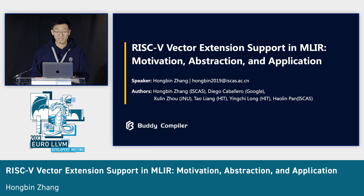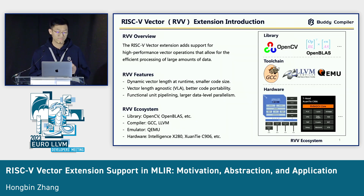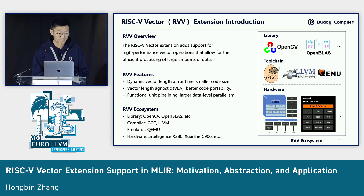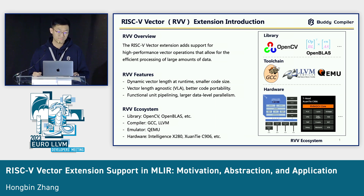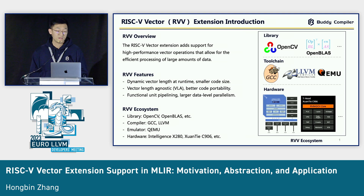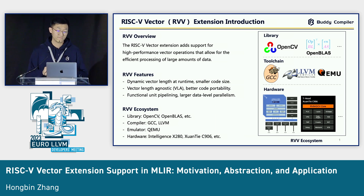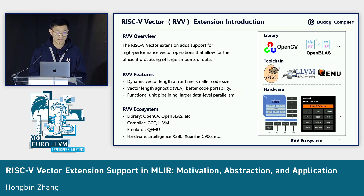I will share the motivation, abstraction, and application. Let's begin from a brief introduction about the RISC-V vector extension, also known as the RVV extension. It supports high-performance vector instructions that allow for efficient processing of a large amount of data. It has many awesome features — at least three of them. One is dynamic vector length at runtime. It supports the VLA strategy, meaning vector-length agnostic. Maybe the hardware implementation uses functional unit pipelining, and the RVV ecosystem is becoming better and better, including libraries, compilers, emulators, and hardware.